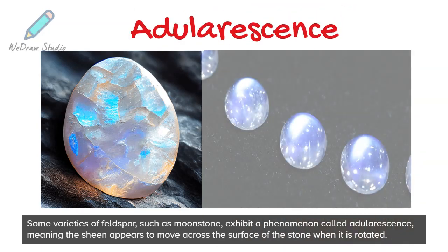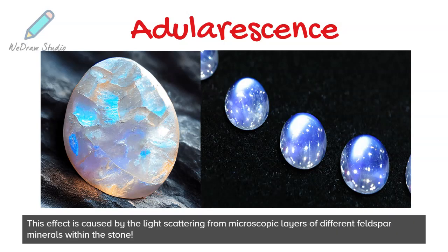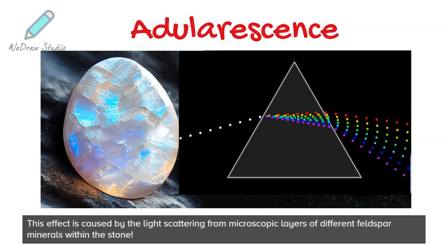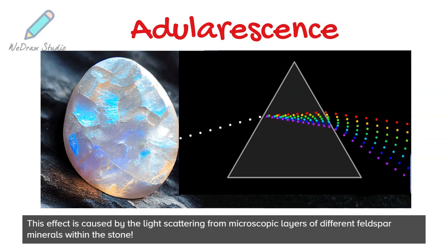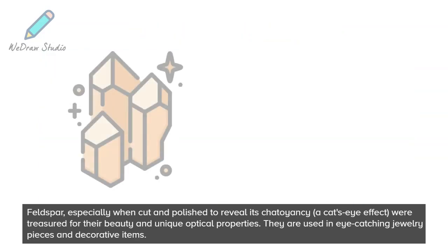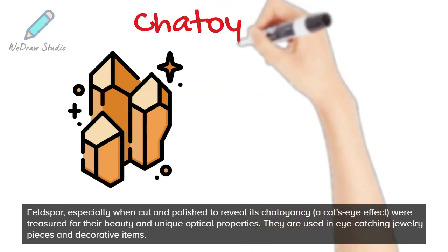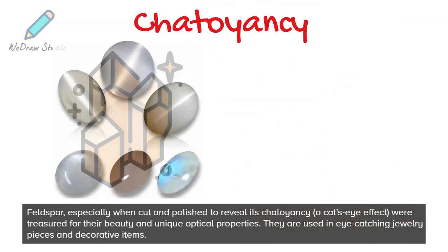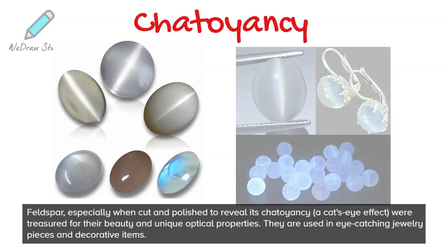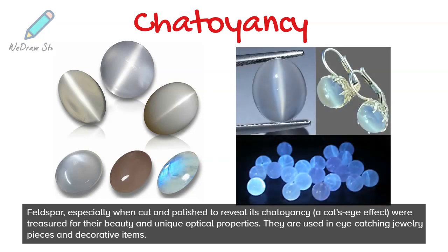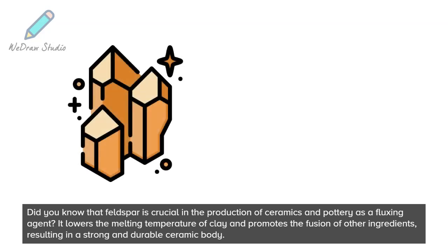Adularescence means the sheen appears to move across the surface of the stone when it is rotated. This effect is caused by light scattering from microscopic layers of different feldspar minerals within the stone. Feldspar, especially when cut and polished to reveal a chatoyancy or cat's eye effect, is treasured for its beauty and unique optical properties, and is used in eye-catching jewelry pieces and decorative items.